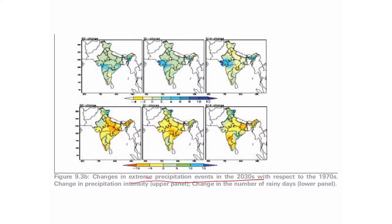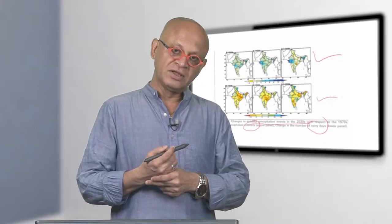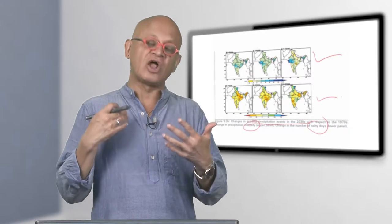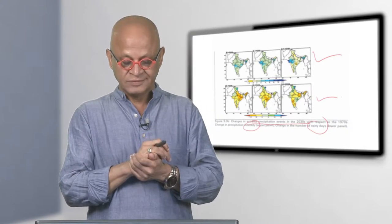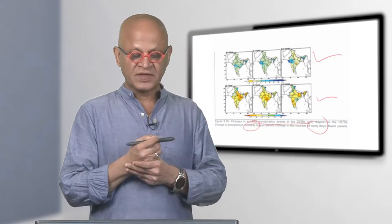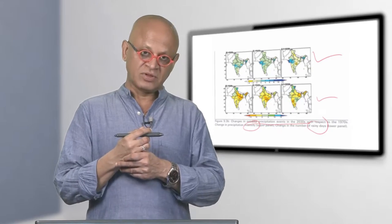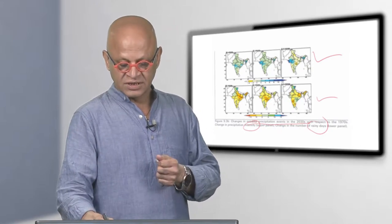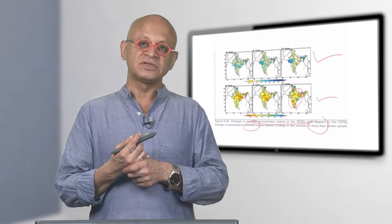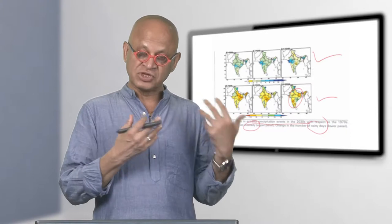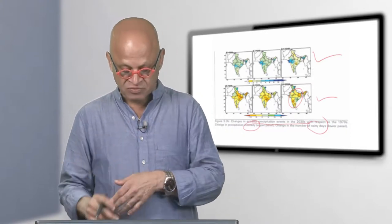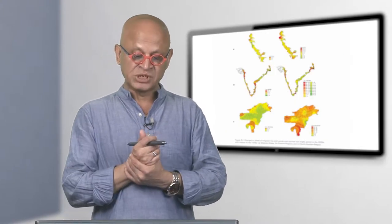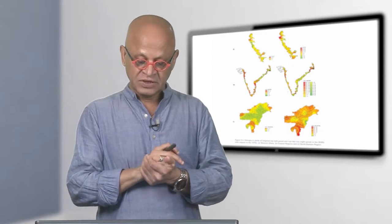The changes in extreme precipitation events in the 2030s - this is the intensity in the upper panel and the number of rainy days in the lower panel. In the monsoon lecture, I will show that a lot of things about the monsoon have been changing in the last 100 years. The projections of extremes again may not be highly reliable because this is just one model whose simulations have been used.